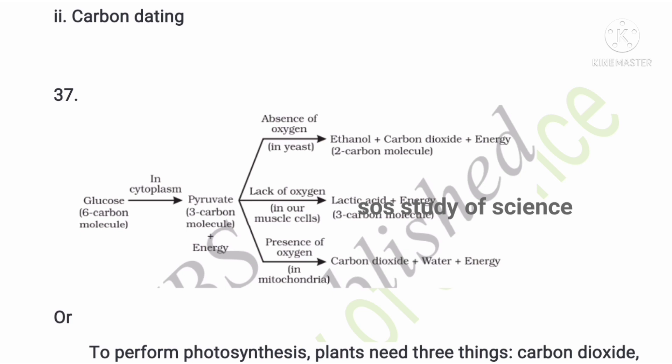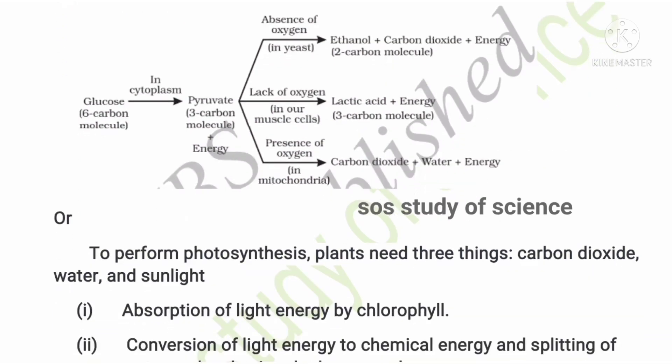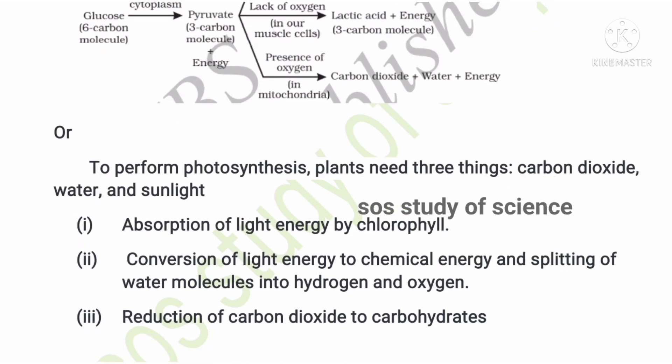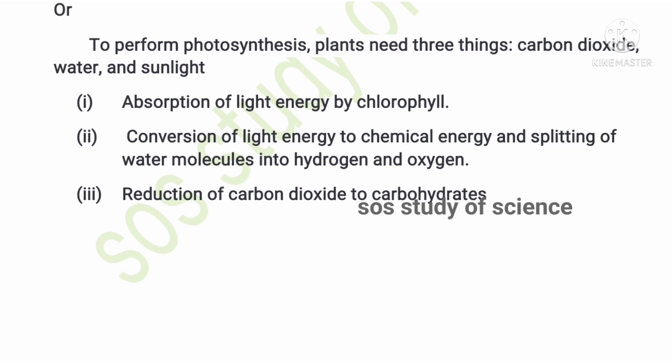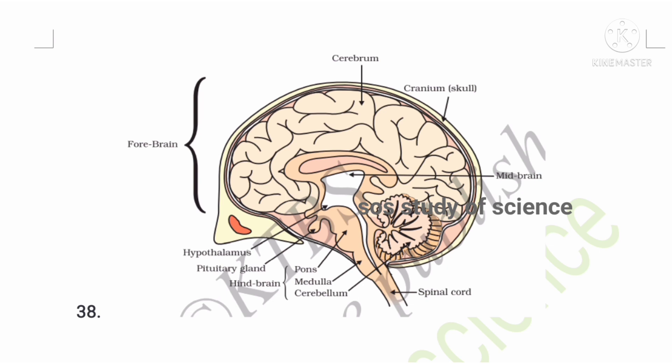They also asked about factors essential for photosynthesis: sunlight, carbon dioxide, and water. Events during photosynthesis include absorption of light energy by chlorophyll, conversion of light energy into chemical energy by splitting water into hydrogen and oxygen, and reduction of carbon dioxide into carbohydrates.